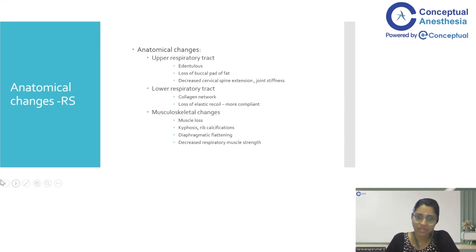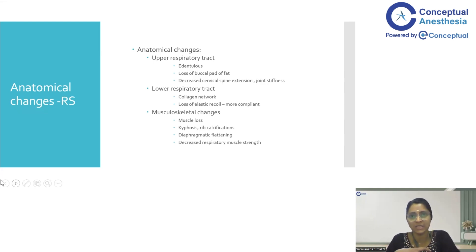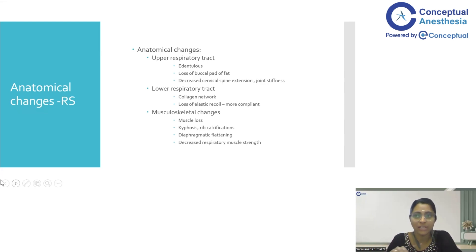In the lower respiratory tract, there is loss of elastic recoil and hence the lung will become more compliant. In the musculoskeletal system of the respiratory system, there is muscle loss, intercostal muscle loss, and kyphosis. There can also be diaphragmatic flattening because of diaphragmatic muscle loss and decreased respiratory muscle strength.